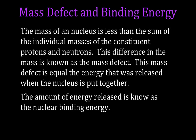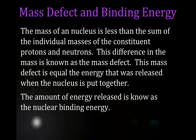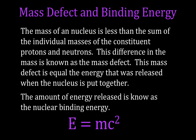This difference in mass is known as the mass defect. From Einstein's equation E=mc² we can convert easily between mass and energy, so the mass defect is equal to the energy that is released when the nucleus is put together.